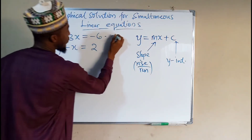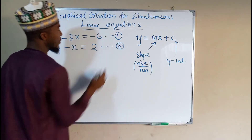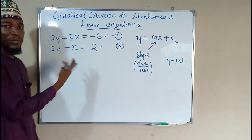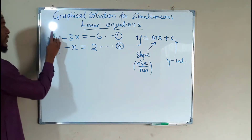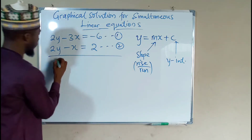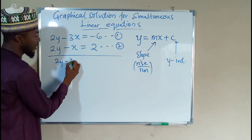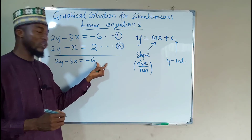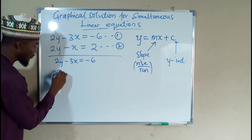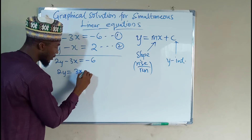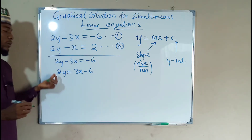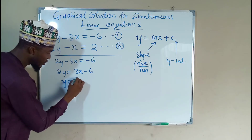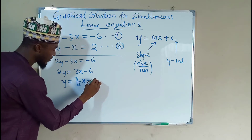So we have equation 1 and equation 2. We are going to transform each of these two equations into this form by making y the subject of the equation. For the first one, we have 2y minus 3x equals negative 6. Taking the 3x term to the right-hand side makes it positive: 2y equals 3x minus 6. Dividing each term by 2, we get y equals 3 over 2 times x minus 3.